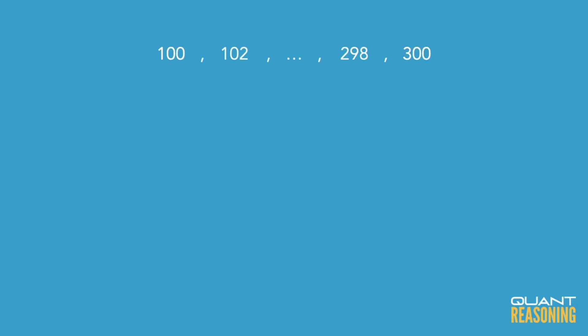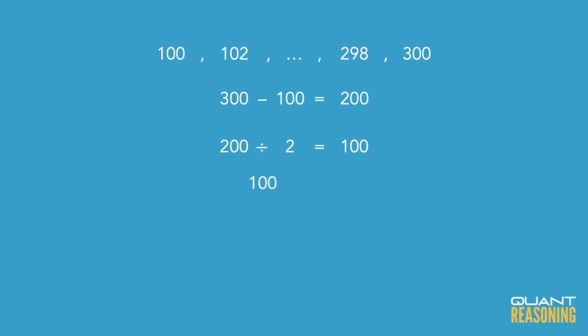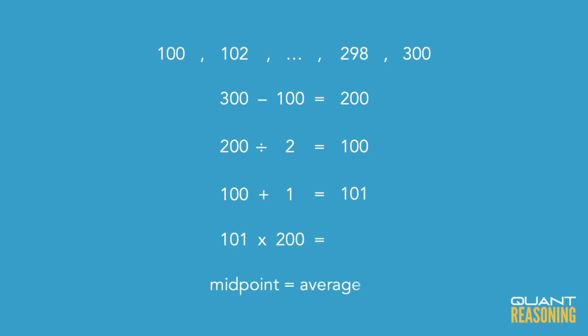So to find the number of terms: take the range, divide by the size of each space, and add one. Applying that here: range of 200, space of 2, plus 1 gives us 101 terms. The sum of all these numbers is the number of terms — 101 — multiplied by the average, 200, which gives us 20,200.